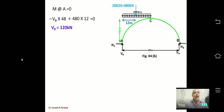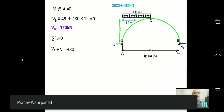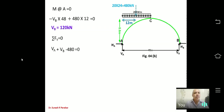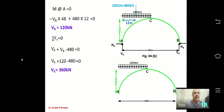From ΣFY = 0: VA + VB − 480 = 0, giving VA = 360 kN. Now to find HA, we take moment about C = 0 considering the right part, since the right part has no load — this reduces calculations.